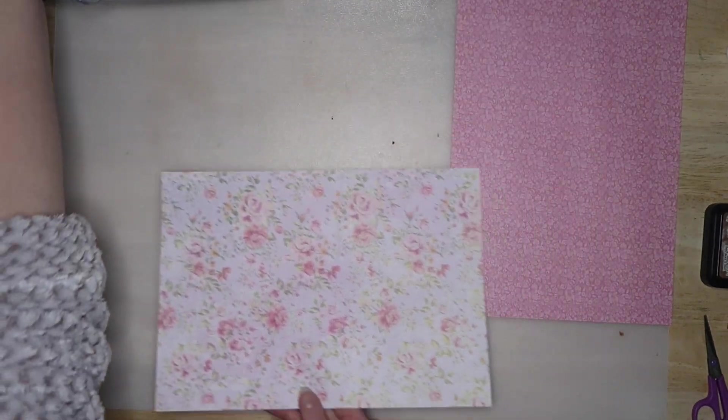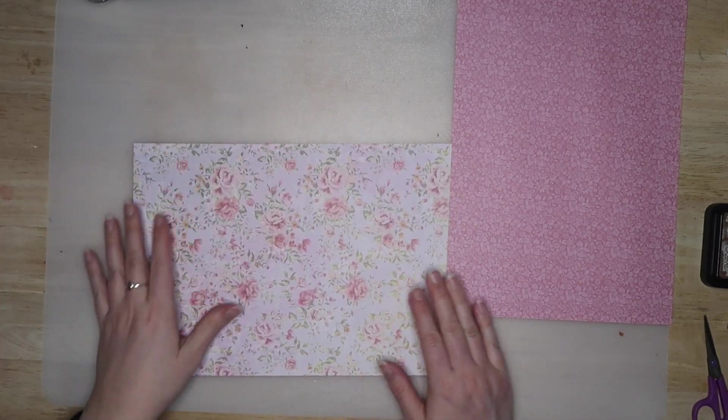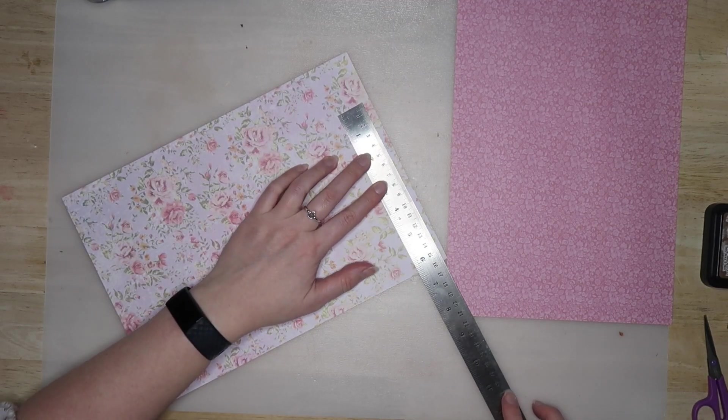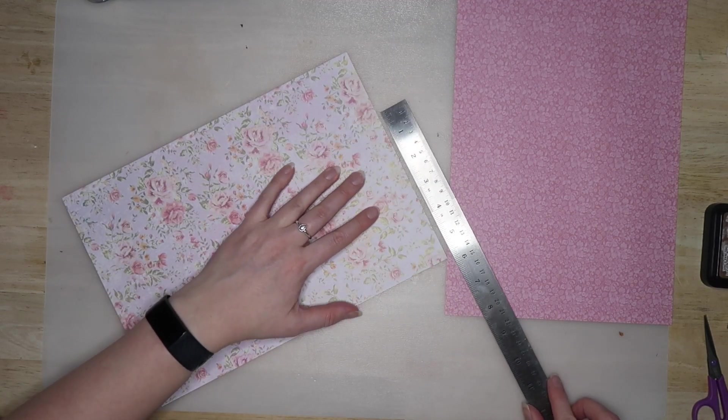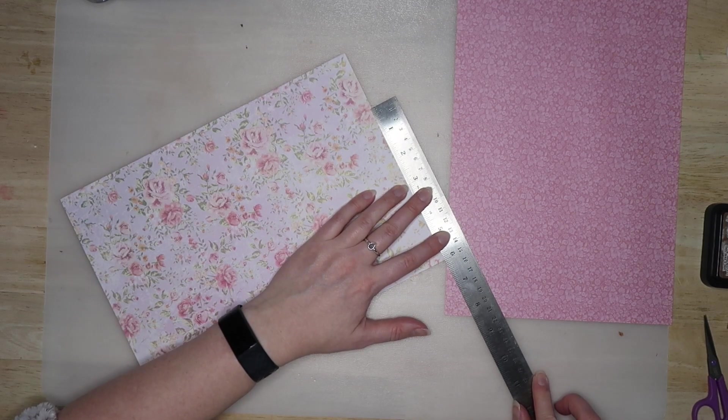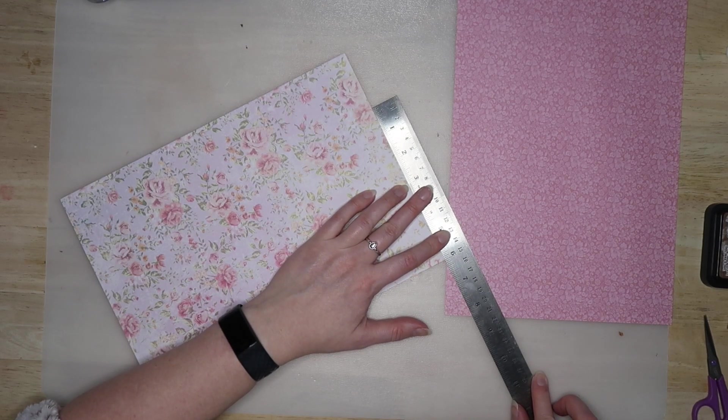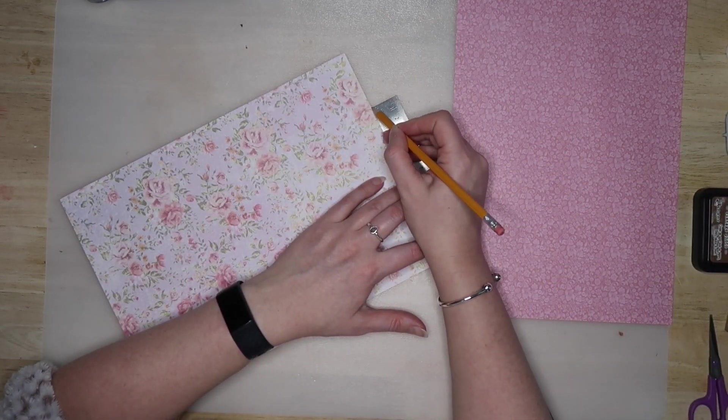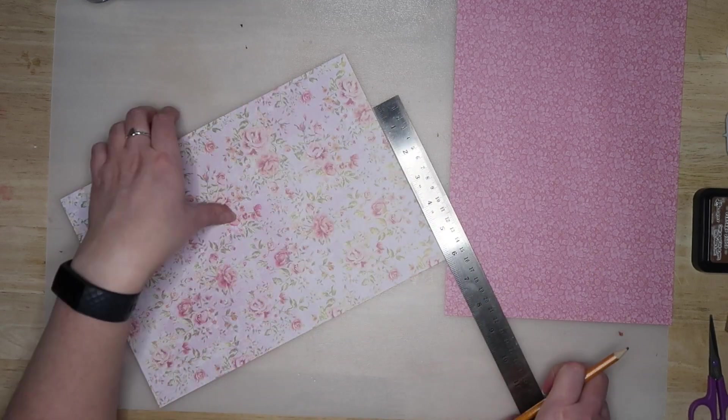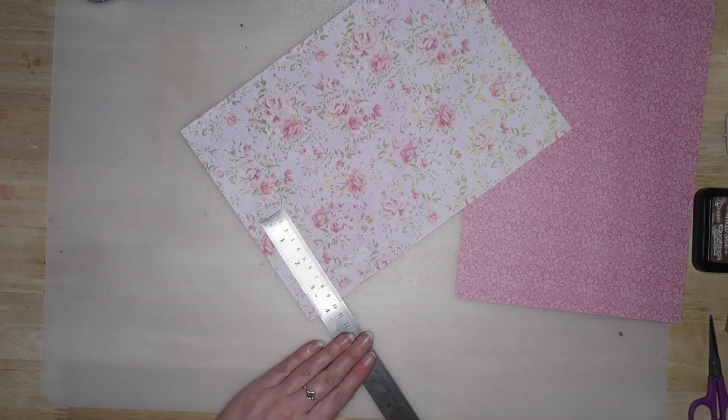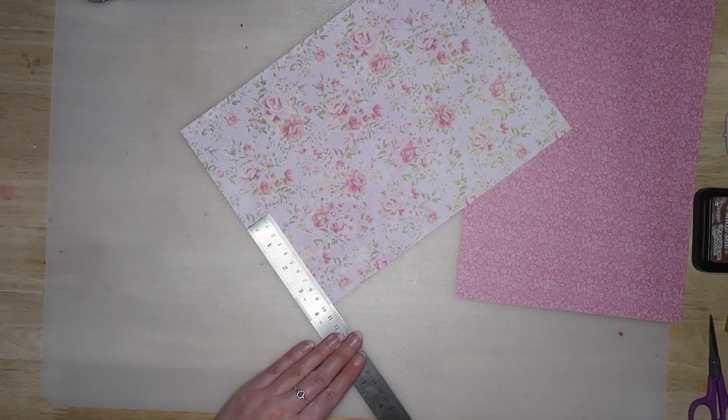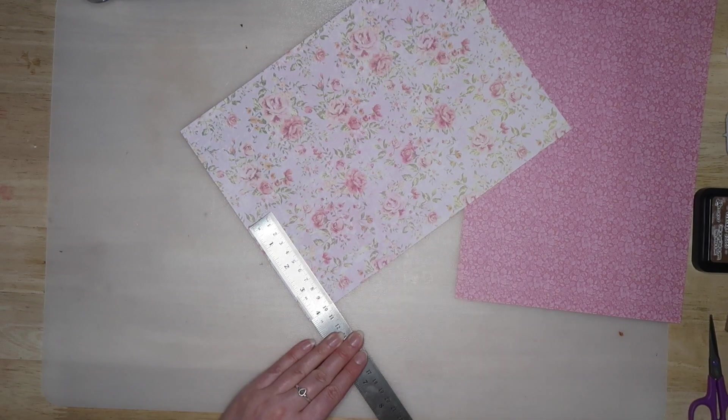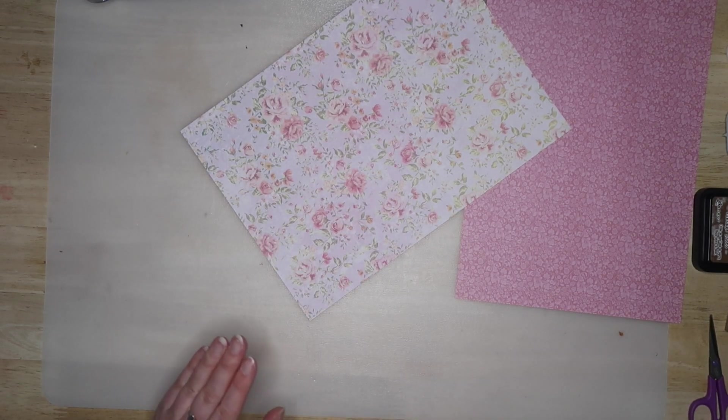So first of all what I need to do is measure the edges. We're going to go with the measurements that Rita did, but I'm sure it doesn't have to be this exact height. So six inches we're doing here, six inches on one side and then we're going to do four inches on the opposite side.